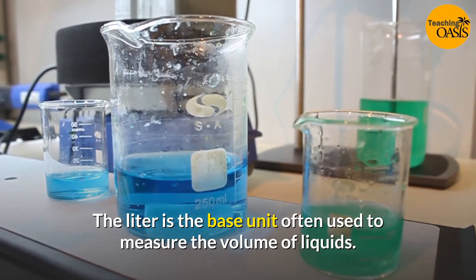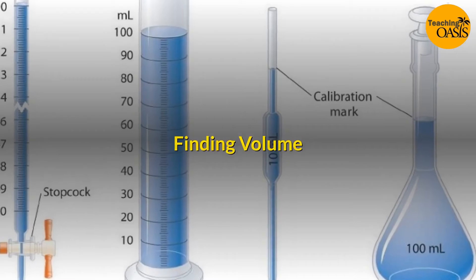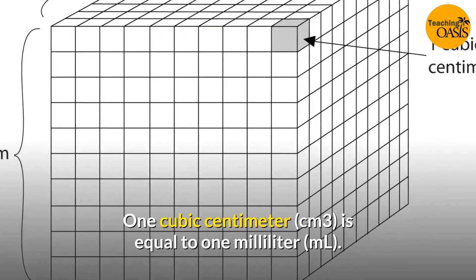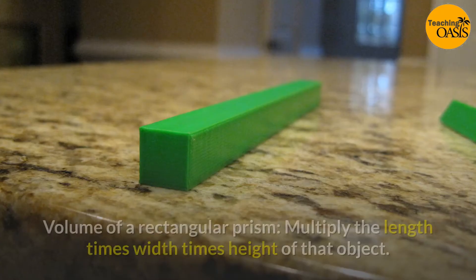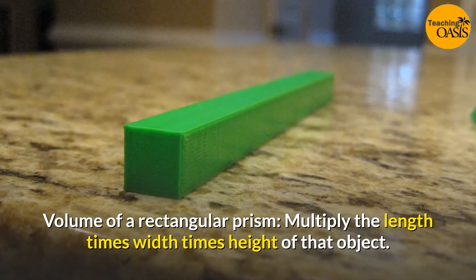Finding volume: One cubic centimeter (cm³) is equal to one milliliter (mL). Volume of a rectangular prism: multiply the length times width times height of that object.